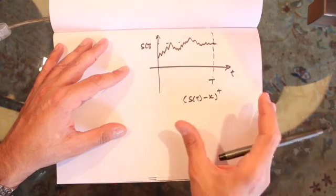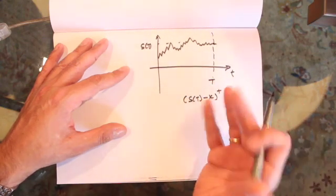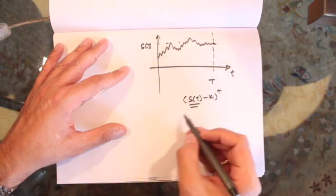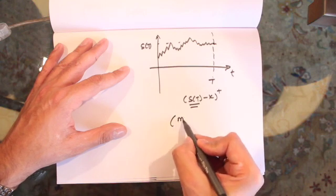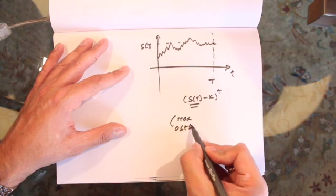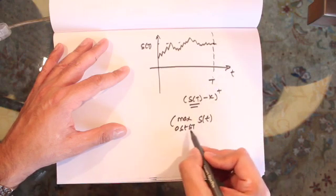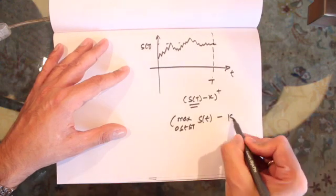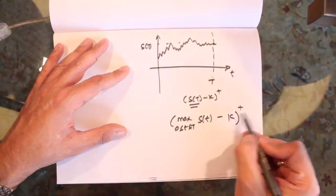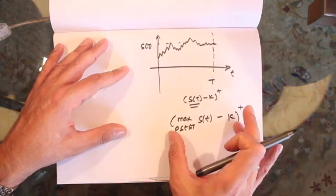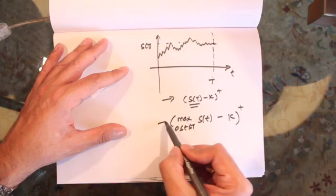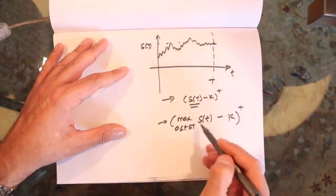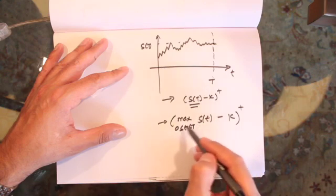Lookback options are different from European call options. The main difference is that a lookback option is path dependent. The payoff of a lookback option is basically the maximum value that the stock takes before expiration. So the payoff is the maximum value the stock takes between time 0 and T. For a fixed strike lookback option, the strike price is K, and we take the maximum of this quantity and zero.